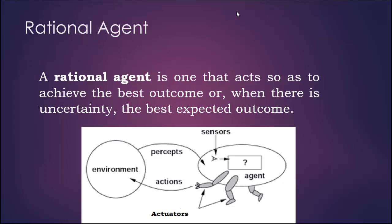We can give the definition of rational agent as a rational agent is one that acts so as to achieve the best outcome or, when there is uncertainty, the best expected outcome.